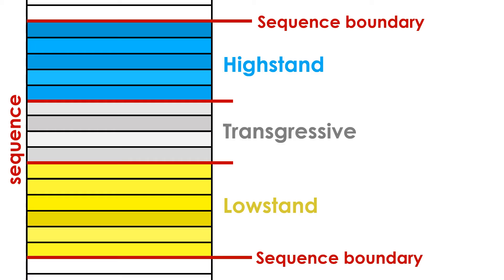In any case, the boundaries between sequences, systems tracts, and parasequences are flooding surfaces, marking changes in facies from shallow to deep.